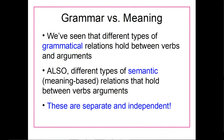What we've talked about so far are different types of grammatical relations that hold between verbs and arguments — things like subjects and objects, which are relationships between the verb and the noun it's interacting with. However, there are also different types of semantic relations that hold between verbs and arguments. Semantic relations are more meaning-based than grammar-based. Grammar and meaning are, to a large extent, actually separate and independent from each other.